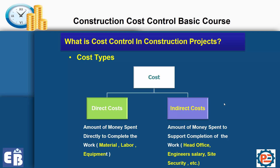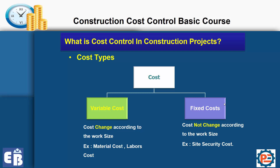In construction projects, indirect cost is usually expressed as a percentage of your budget — for example, 10% of the contract value spent on indirect costs, with the remaining 90% on direct costs. We also have variable cost and fixed cost. Variable cost changes according to the work size, like material cost and labor cost. Fixed cost does not change according to work size, like site security cost. This is the types of costs — general information for the first lesson, as we may use some or all of these in our next videos.